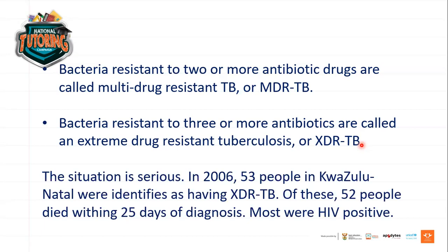The situation is very serious. In 2016, 53 people in KwaZulu-Natal were identified as having XDR-TB. Out of these 53, 52 died within 25 days of diagnosis — only one person survived. Most of those diagnosed were HIV positive, as the HIV virus weakens the immune system, making people prone to more diseases.